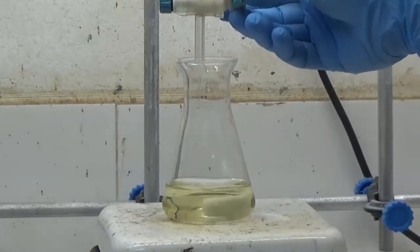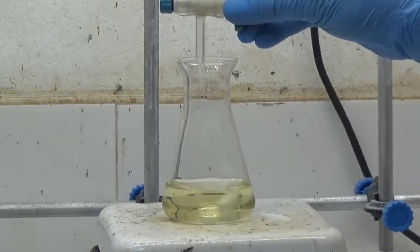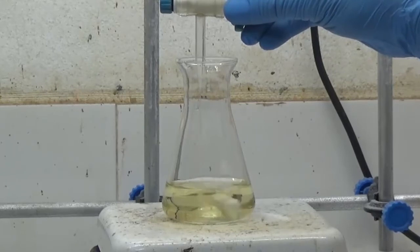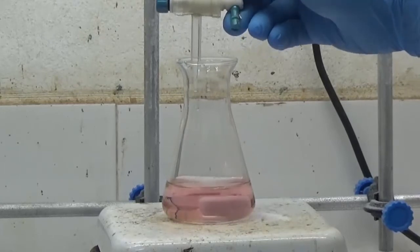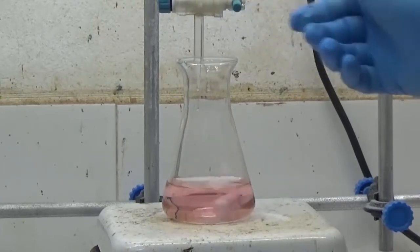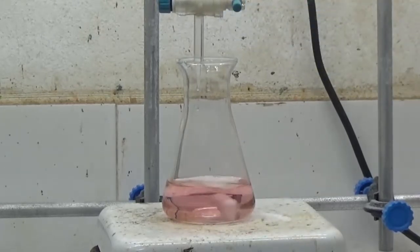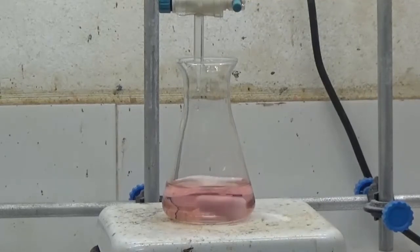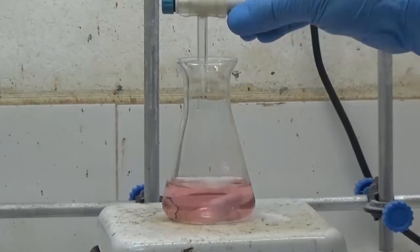That's a yellow solution. Put 25 ml of 0.01 molar hydrochloric acid solution in a burette and drop the acid solution with stirring on the sodium hydroxide solution until it changes color. It's a red solution. The pH of the solution changed between alkali and acid.